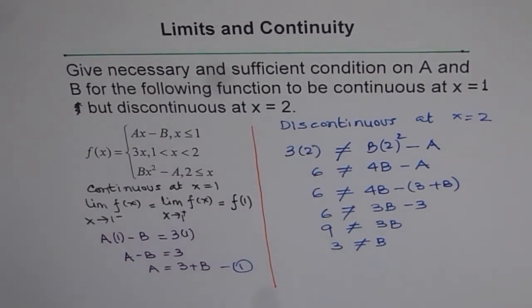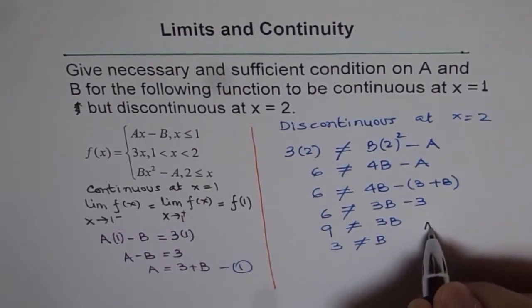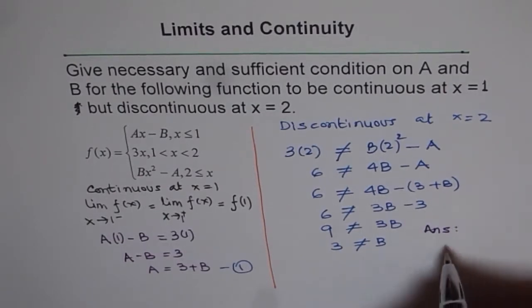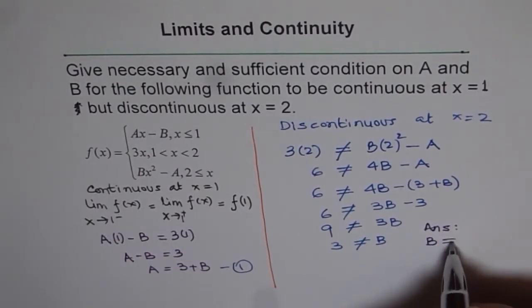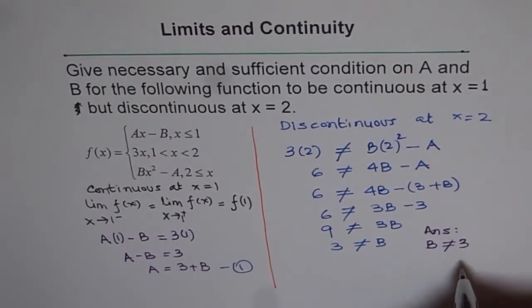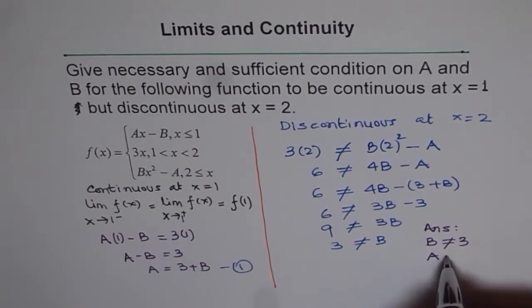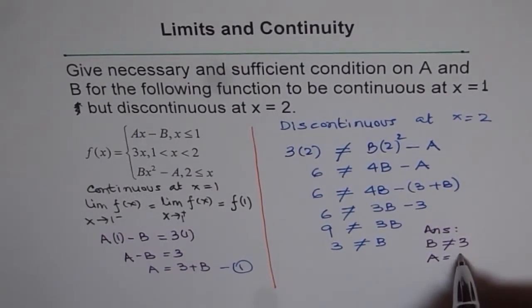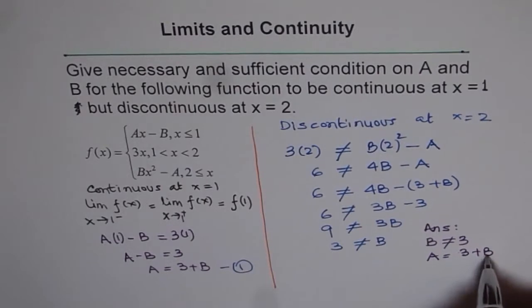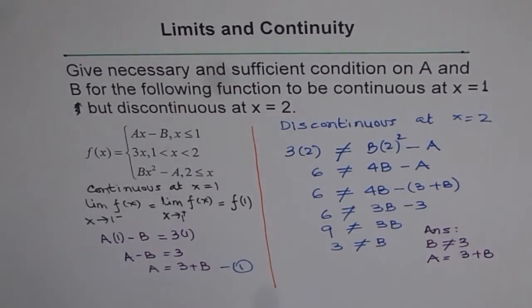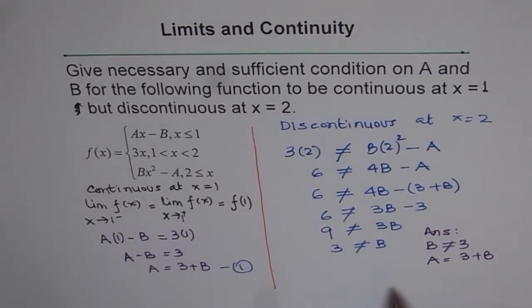So that is the condition for us. So now we get closer to our answer. So our answer in this case is, how do we write our answer? Is that B is not equal to 3. That is condition number 1. And A is equal to 3 plus B. So we can have many values of A's and B's which are going to satisfy this equation. But the condition is that B should not be equal to 3. That is what we mean. And that is what the answer is.